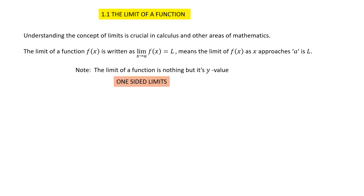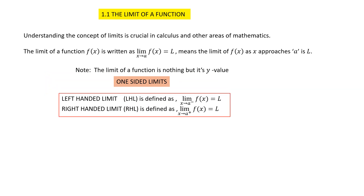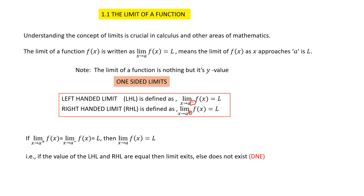There are two kinds of one-sided limits. One is called the left-hand limit and the other is called the right-hand limit. To indicate the left-hand limit we use a minus symbol, so a minus means x approaches a from the left side. If we say a plus, x approaches the value from the right-hand side. In any problem, if the left-hand limit equals the right-hand limit, then we say the limit exists. If they are not equal, we say the limit does not exist, written as DNE.